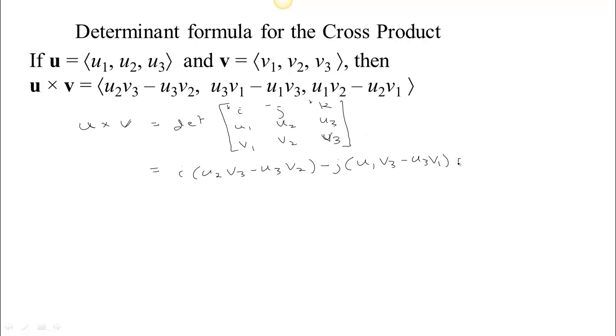And then plus k times u₁v₂ minus u₂v₁. Okay, so you can notice that the i entry doesn't involve any of the first components, right? Because to do that determinant, you cross them out. So you only have 2's and 3's, right? And they're crossed up. Those are little determinants. Notice this is the right thing because it says the first entry is u₂v₃ minus u₃v₂.